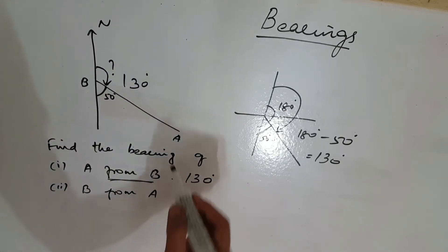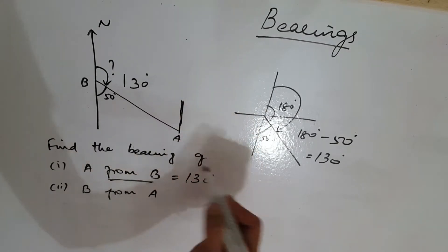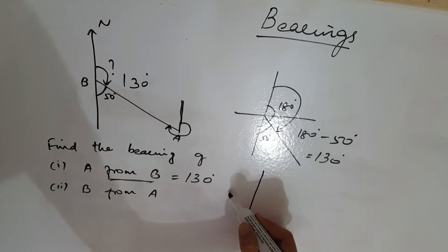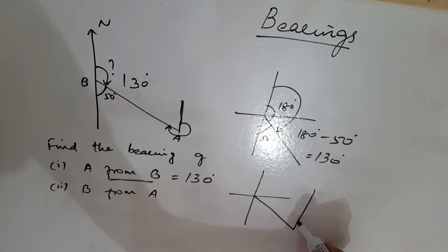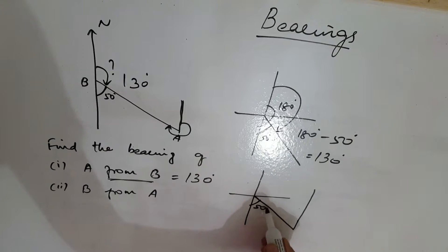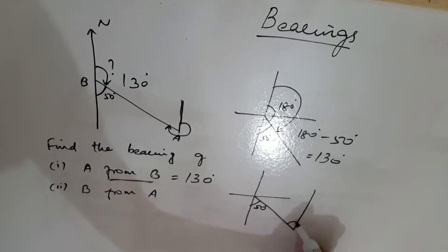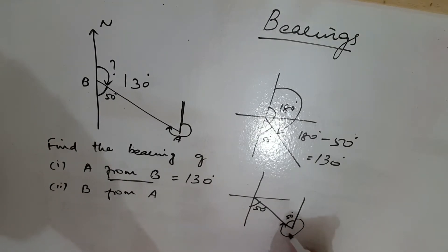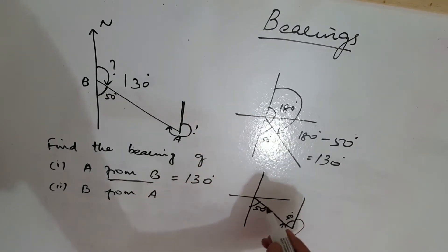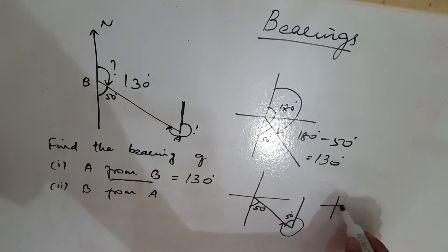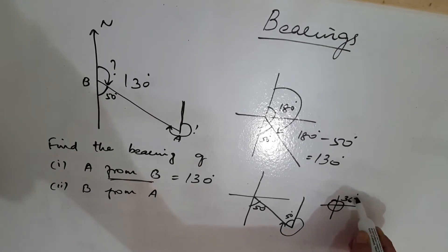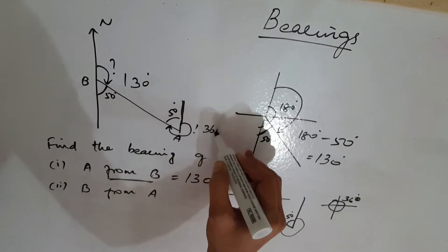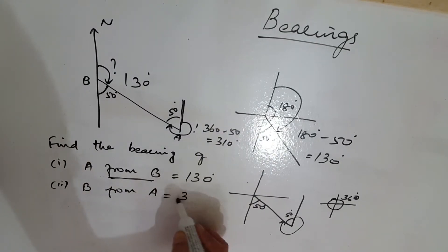After that, B from A. B from A — you can draw the line and calculate in this area. Already we know this portion is 50, this portion is also 50 degrees. This full is 360 degrees, so 360 minus 50 is 310 degrees. So the answer is 310 degrees.